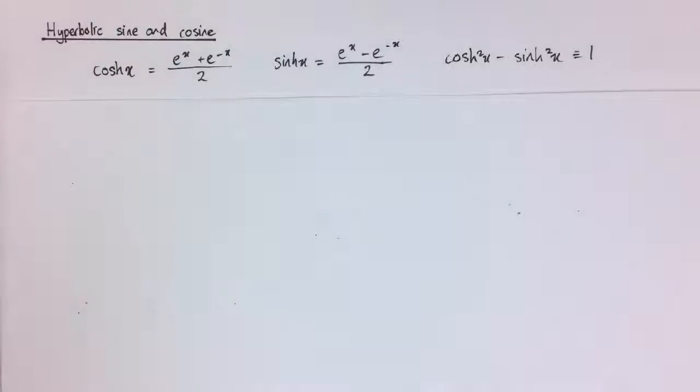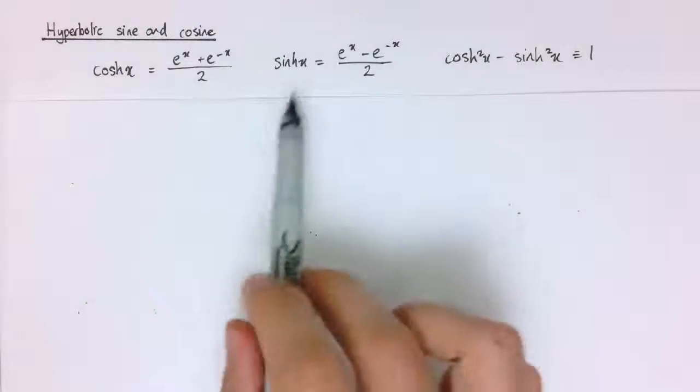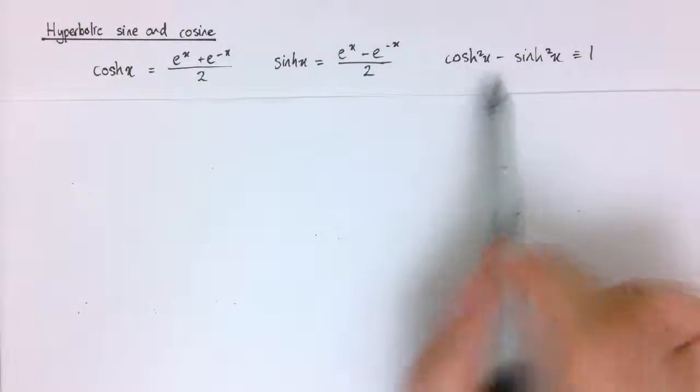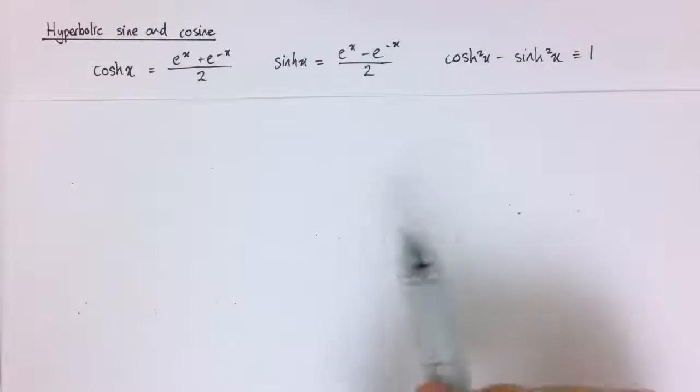So in a previous video we introduced cosh and sinh with these definitions and also derived this identity, cosh squared x minus sinh squared x equals 1.